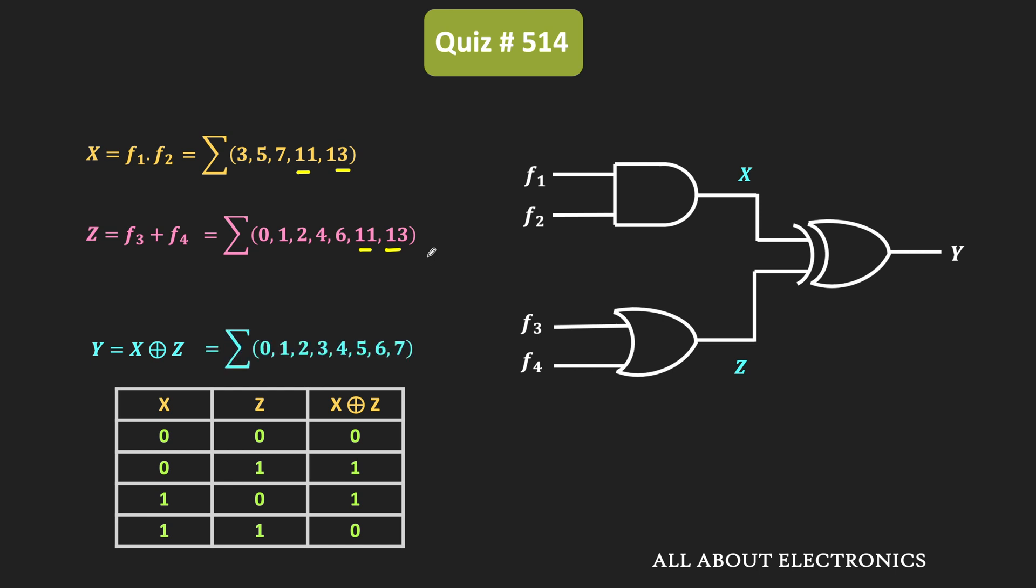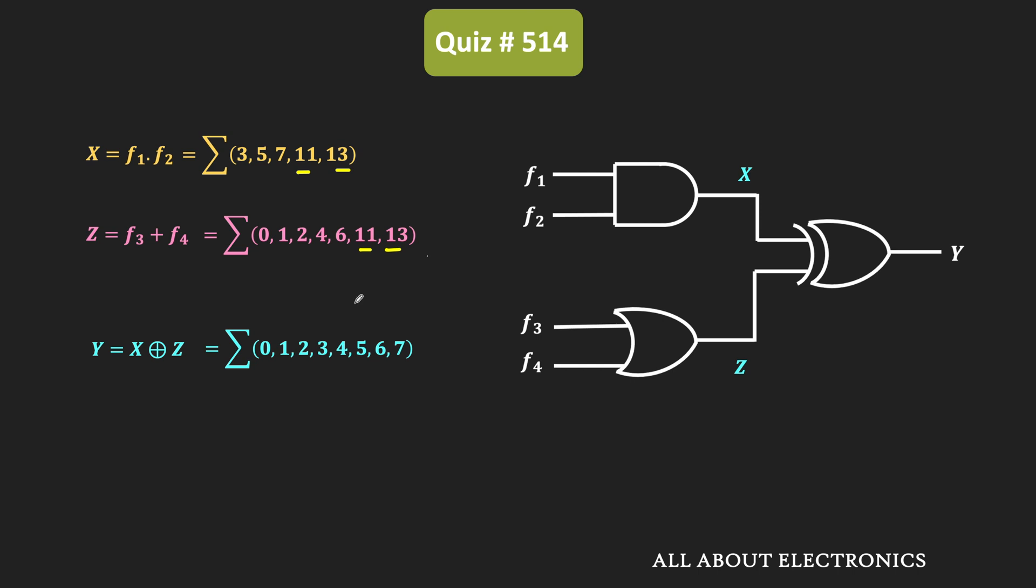That is minterms 0, 1, 2, 3, 4, 5, 6, and 7. So here, this is the representation of the function in the SOP form. And similarly, in the POS form or product of sum form, it will contain the following maxterms. That is 8, 9, 10, 11, 12, 13, 14, and 15. So this is how the output y can be represented.